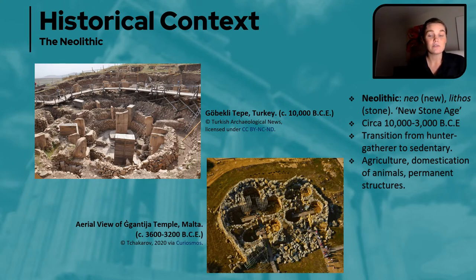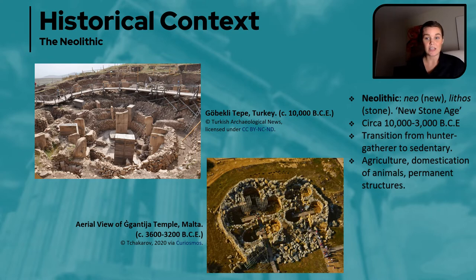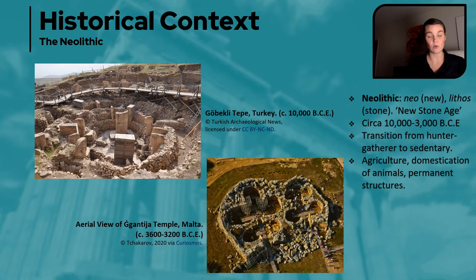The temple is most likely constructed — its initial phases anyway — around 3600 to 3200 BCE, during a time known as the Neolithic period. The word itself comes from 'neo' meaning new and 'lithos' meaning stone, so its literal definition is 'new stone age.' This period saw one of the most drastic shifts in human and societal evolution: people ceased their hunting and gathering lifestyles and became more sedentary, formed more permanent settlements, began farming and domestication of animals. This created a surplus that led to some of the first architectural constructions used as a form of status and ritual. This complex on Gozo is one of the earliest we know of in the archaeological record in general.